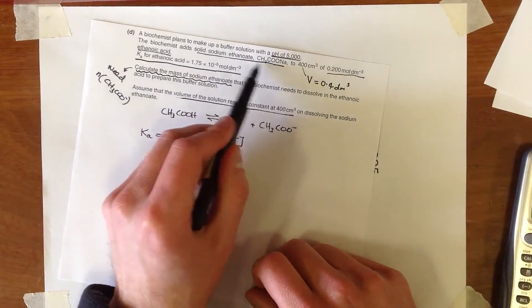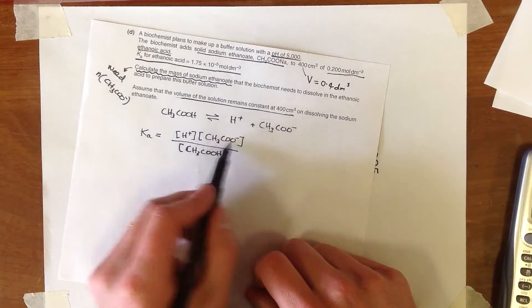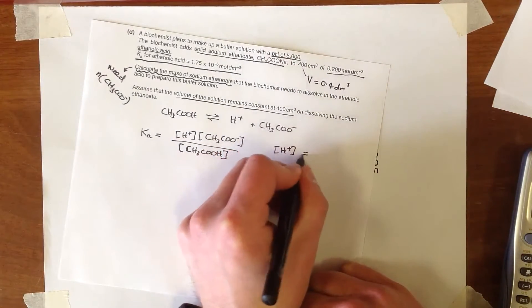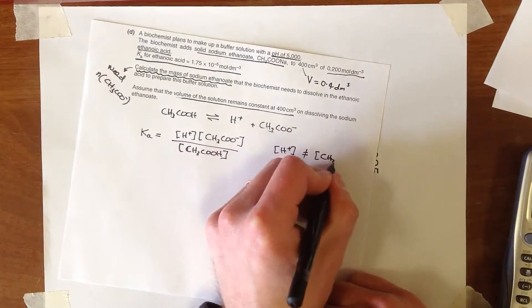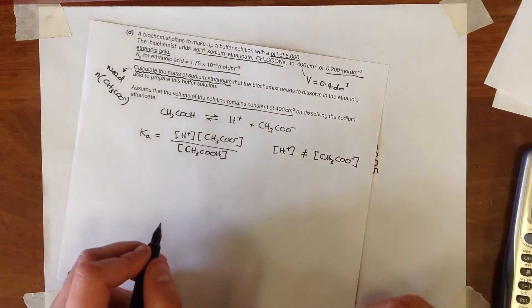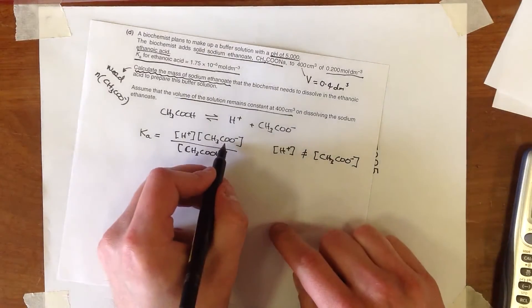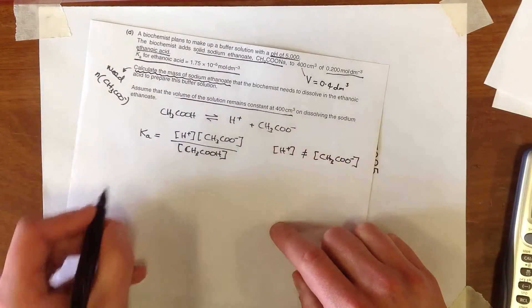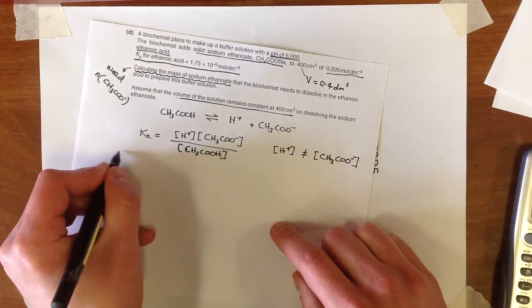in this system, we've added a load of sodium ethanoate. So we've added a load of ethanoate. So H+ is not equal to CH3COO-. If you go down that route, you're making a real pickle for yourself, because actually this is what we want to calculate, because we need the number of moles, so we need its concentration. So we can rearrange the equation in the following way.